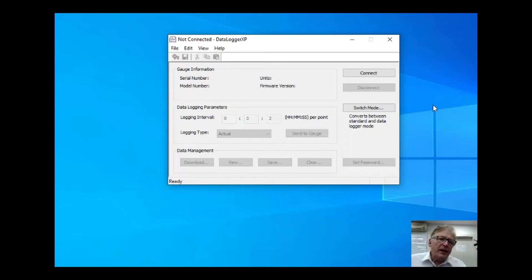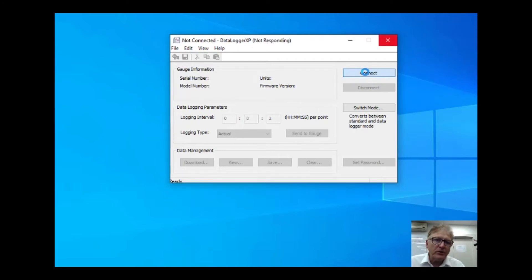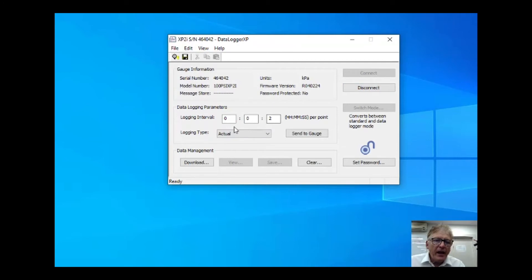Okay, we've installed the software. We've got the logger plugged in via USB and I just click on connect. Now it cycles through the various RS232 ports. It finds the logger. It'll take a couple of seconds. And now we've got, we're connected to the logger.